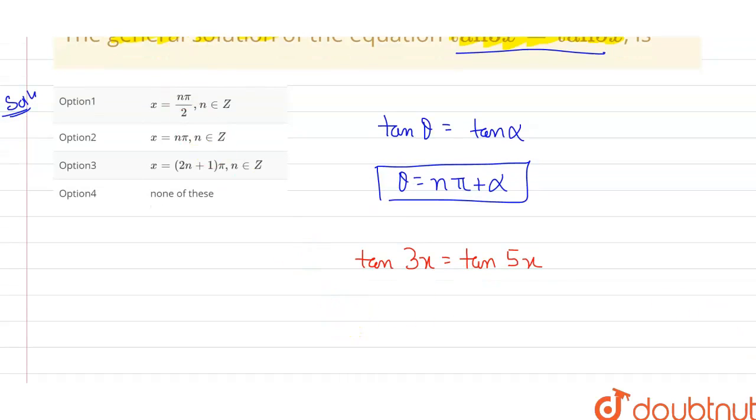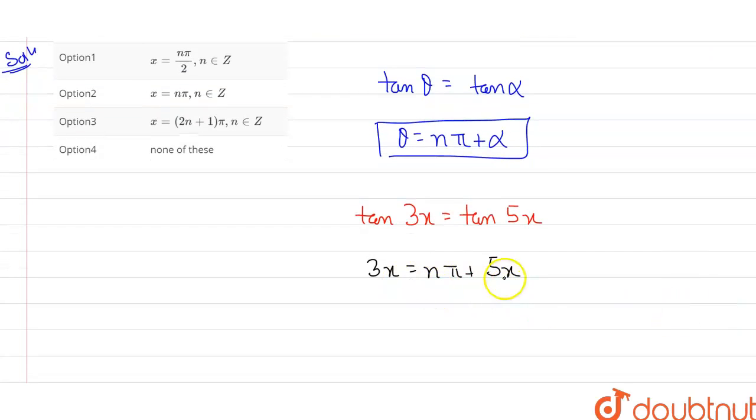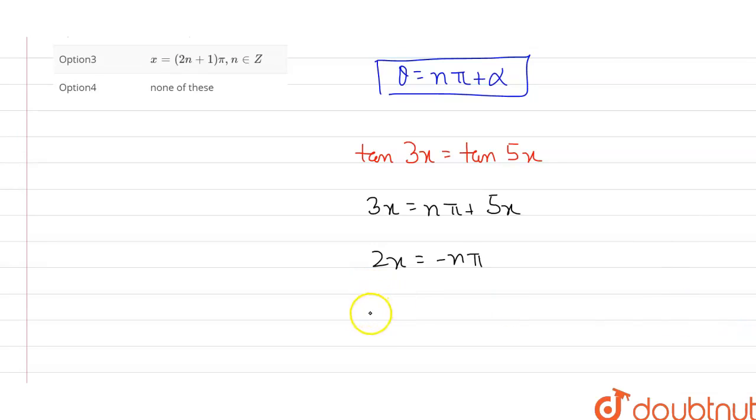So 3x equals nπ plus 5x. In that case, the x value will be: 2x equals -nπ, if I put this nπ on the left-hand side and 5x to the left-hand side. This will be 2x = -nπ, so x = -nπ/2.